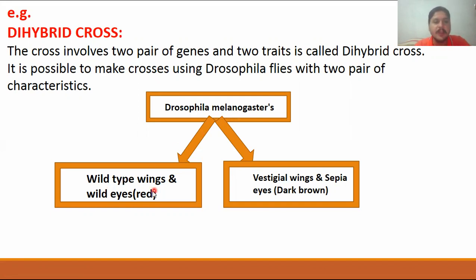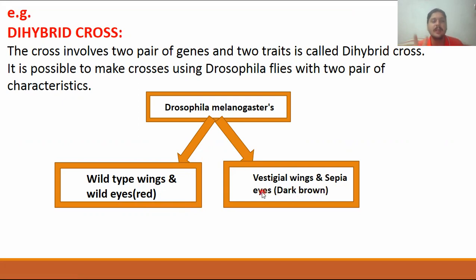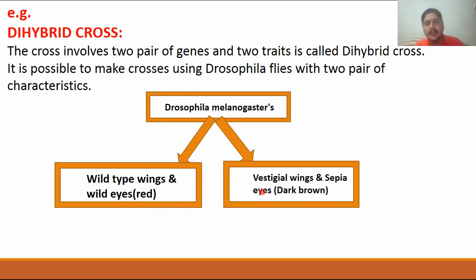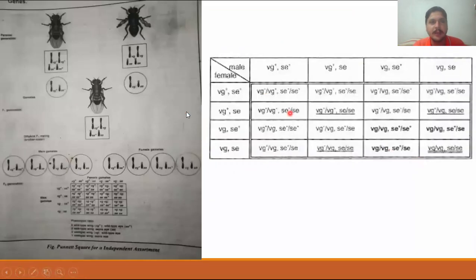There are wild-type wings and wild-type eyes — the wild eyes are red. The second character is the vestigial wings and sepia eyes (CPI), where CPI stands for dark brown eyes. So these are two types of traits. One trait is the eye color and the other trait is the wing shape. Wild-type wings versus vestigial wings, and red eyes versus dark brown (sepia) eyes. This was a dihybrid cross.